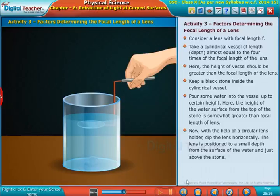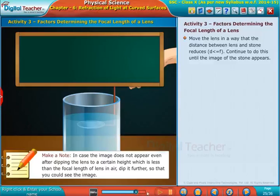The lens is positioned to a small depth from the surface. Even after dipping the lens to a certain height which is less than the focal length of the lens in air, dip it further so that you could see the image.